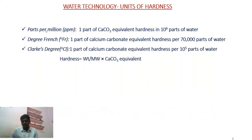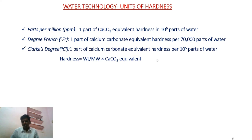Units: hardness can be expressed in ppm, that means 1 part per 10⁶ — that is, 1 part of calcium carbonate equivalent hardness in 10⁶ parts of water. Degree French: 1 part of calcium carbonate equivalent hardness per 10⁵ parts of water. Clark's degree: 1 part of calcium carbonate equivalent hardness per 10⁵ parts of water.